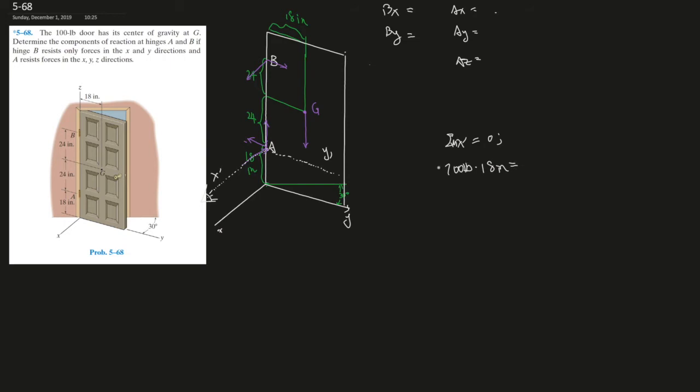Or we can set it on the other side of the equation equals to what's the other force that can generate rotation, which is here, right, at B. By times the distance from here to here, that's 24 times 2, that's 48 inches.